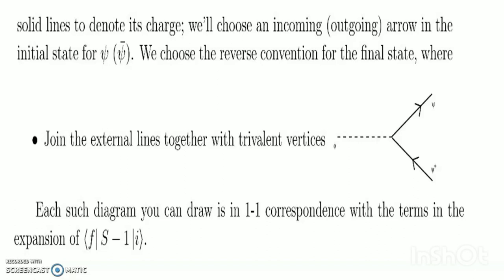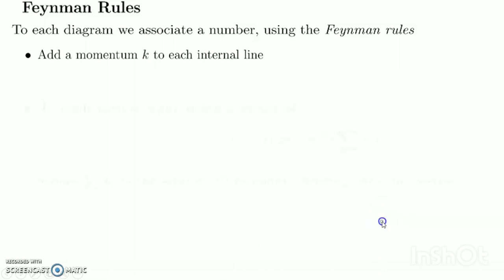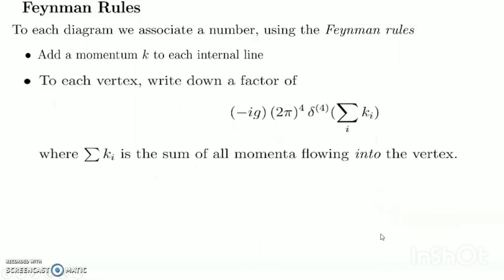Each such diagram you can draw is in one-to-one correspondence with a term in the expansion of ⟨f|S−1|i⟩. Now let's start the Feynman rules. To each diagram we associate a number using the Feynman rules. Assign momentum k to each internal line. To each vertex write down a factor of −ig(2π)⁴ times the delta function δ⁴(Σkᵢ), where Σkᵢ is the sum of momentum flowing into the vertex.